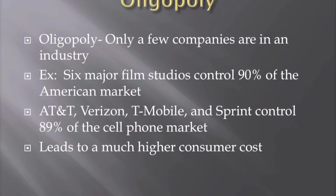Let's discuss an oligopoly. An oligopoly is a market structure where only a few companies are in the industry. An example would be: six major film studios control 90% of the American market in the film industry. Or that AT&T, Verizon, T-Mobile, and Sprint control 89% of the cell phone market. This leads to a higher consumer cost than the normal market would have because there's not a lot of competition.